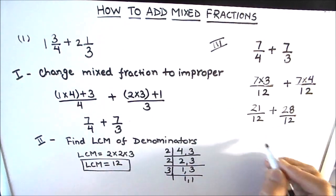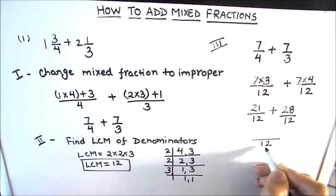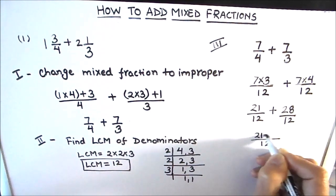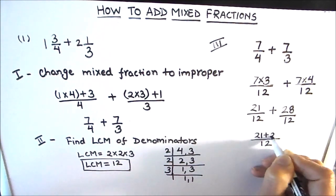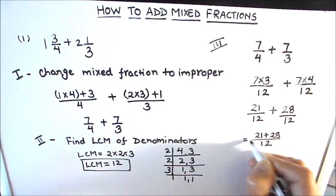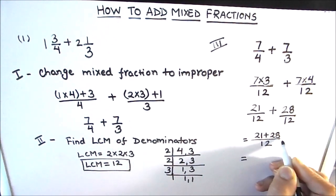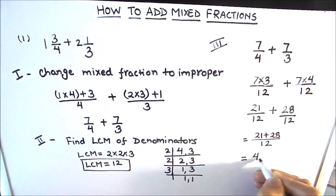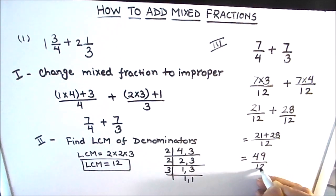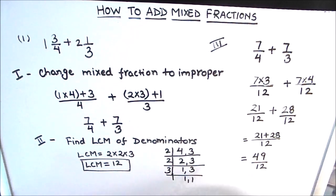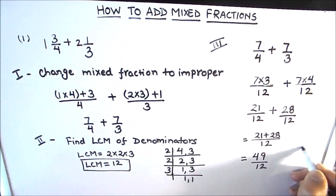Both the denominators are the same, so we can write it with a common denominator. The numerators get added: 21 + 28 = 49, and the denominator is 12. So that's 49/12. As an improper fraction, we can convert it into a mixed fraction by dividing 49 by 12.